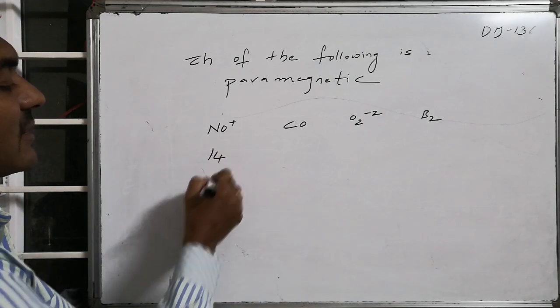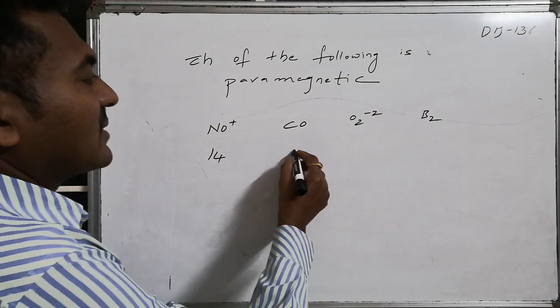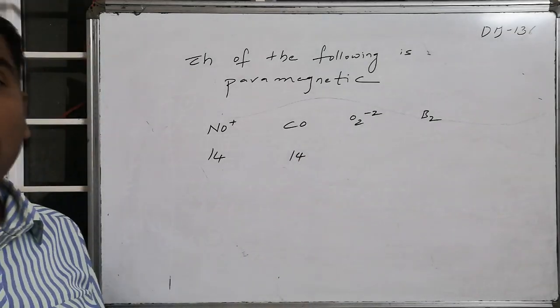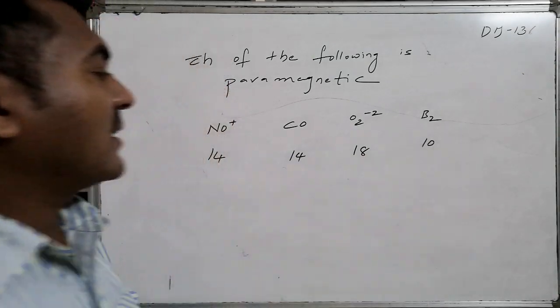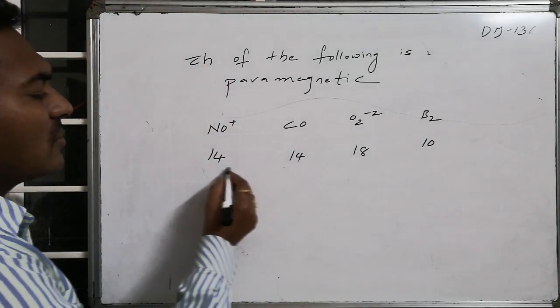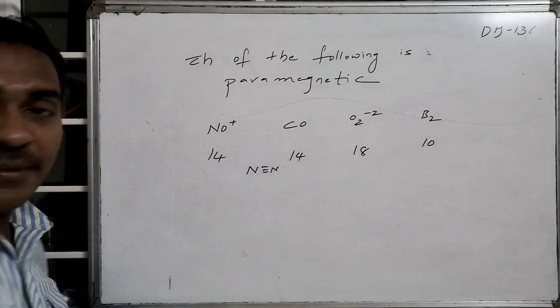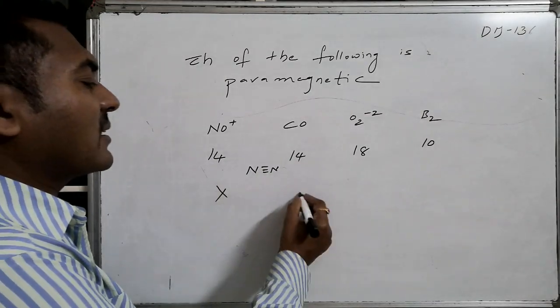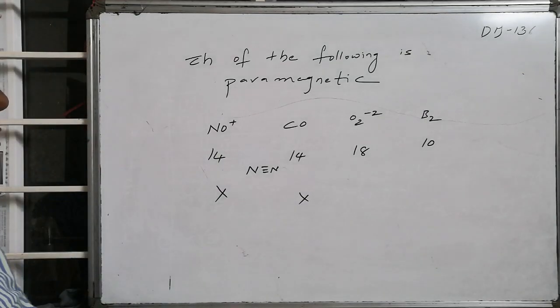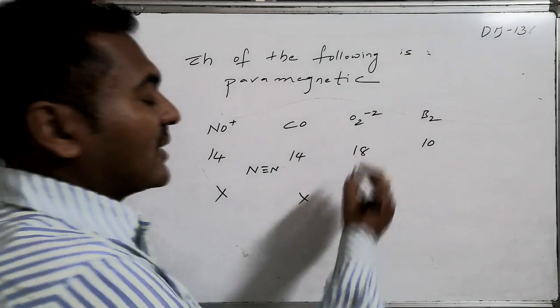NO+ stands for a 14 electron system, whereas CO (8 plus 6) is also a 14 electron system. O2²⁻ is an 18 electron system. B2 is a 10 electron system. As we know, this is similar to that of dinitrogen where a triple bond is present, diamagnetic in nature. Hence, these two are diamagnetic; they do not belong to paramagnetic nature.